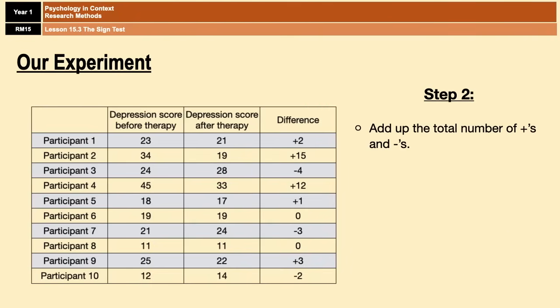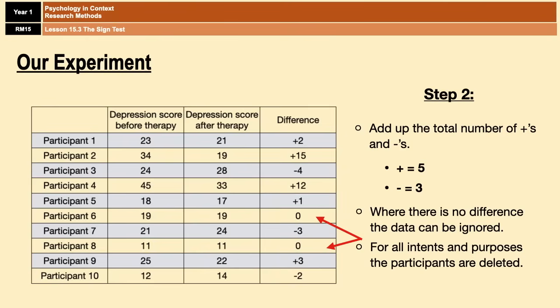Step two is adding up the total number of pluses and minuses. So in our case we have five pluses and three minuses. Now importantly, where there is no difference, the data can be ignored. You're going to need that for later on, so for all intents and purposes the participants are deleted if there is no difference in the before and after score.